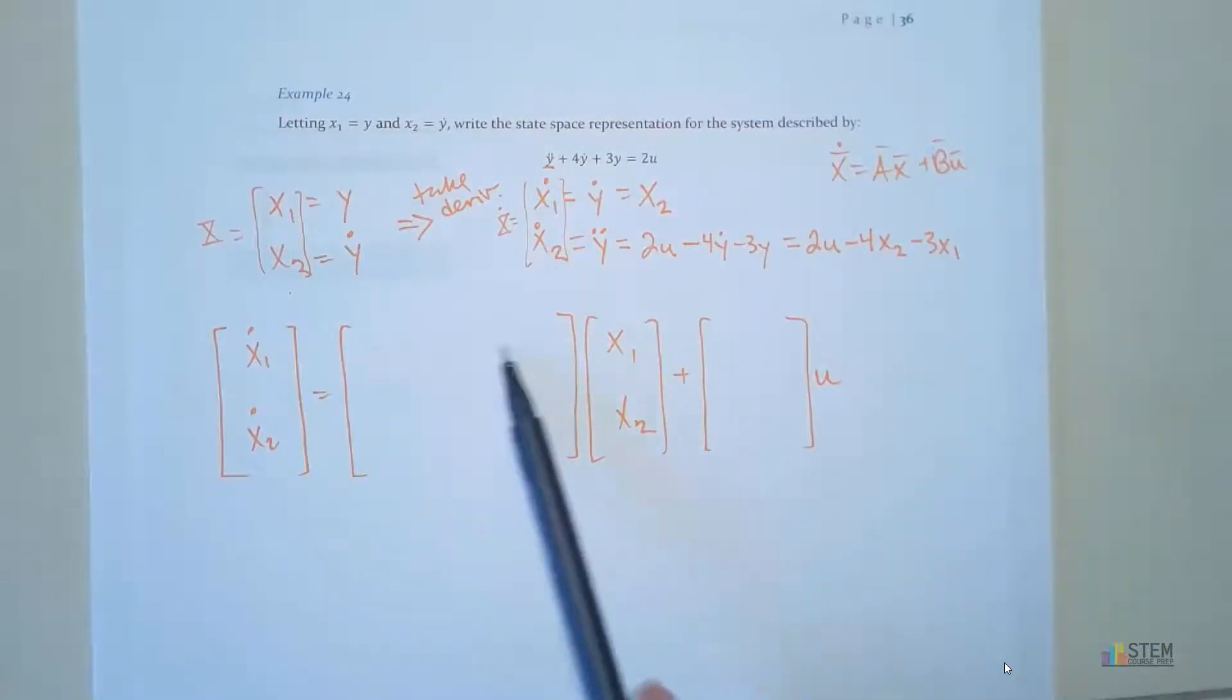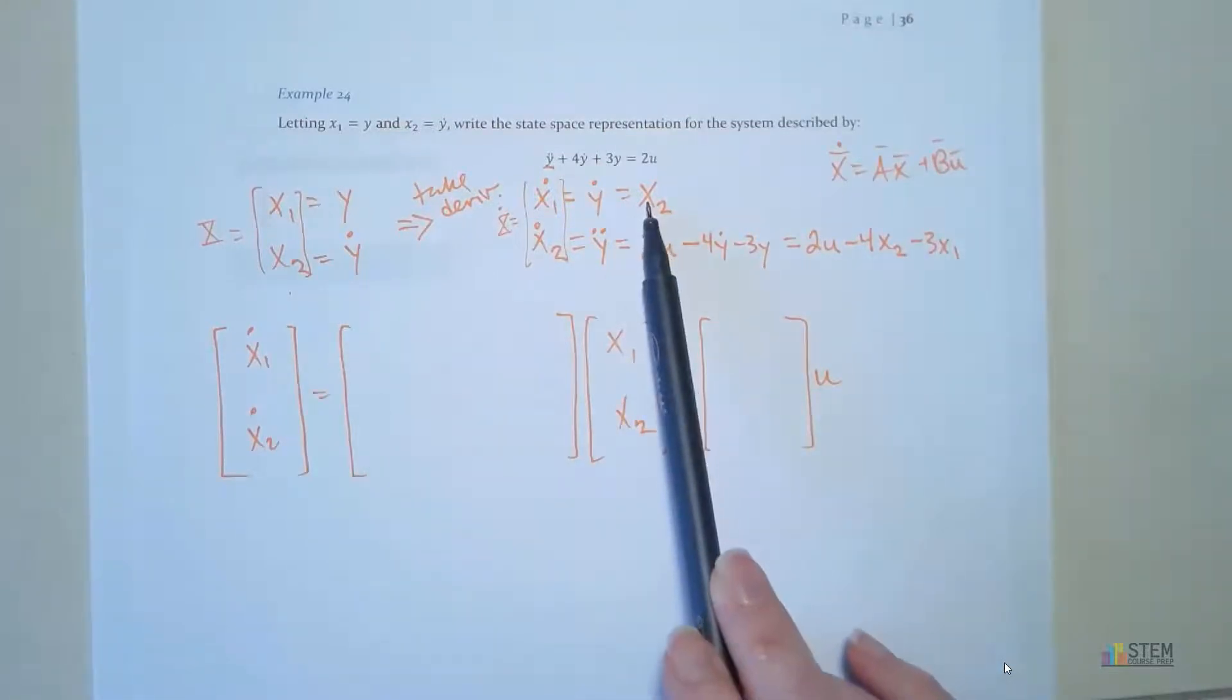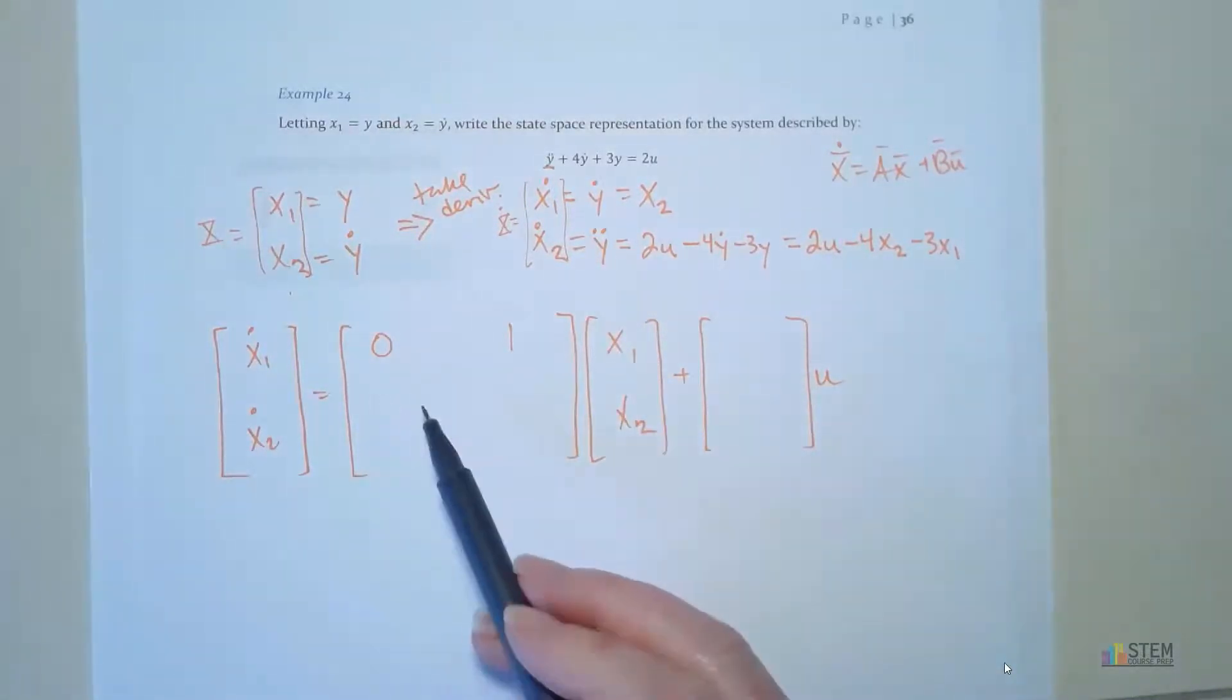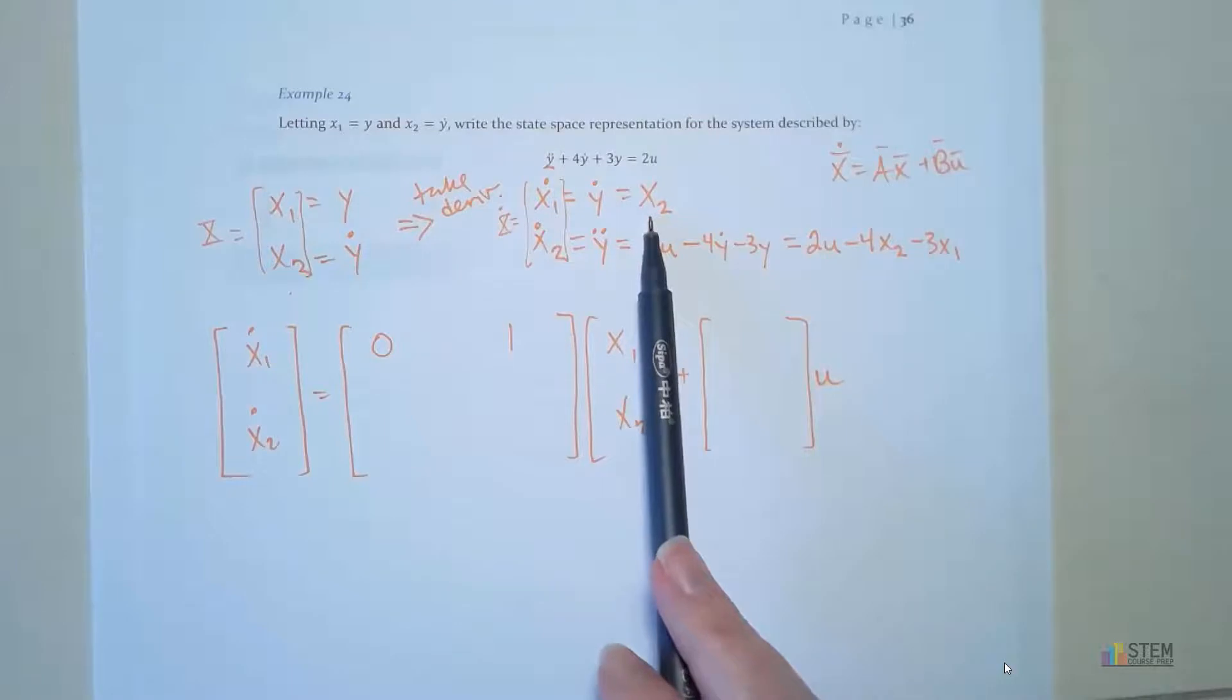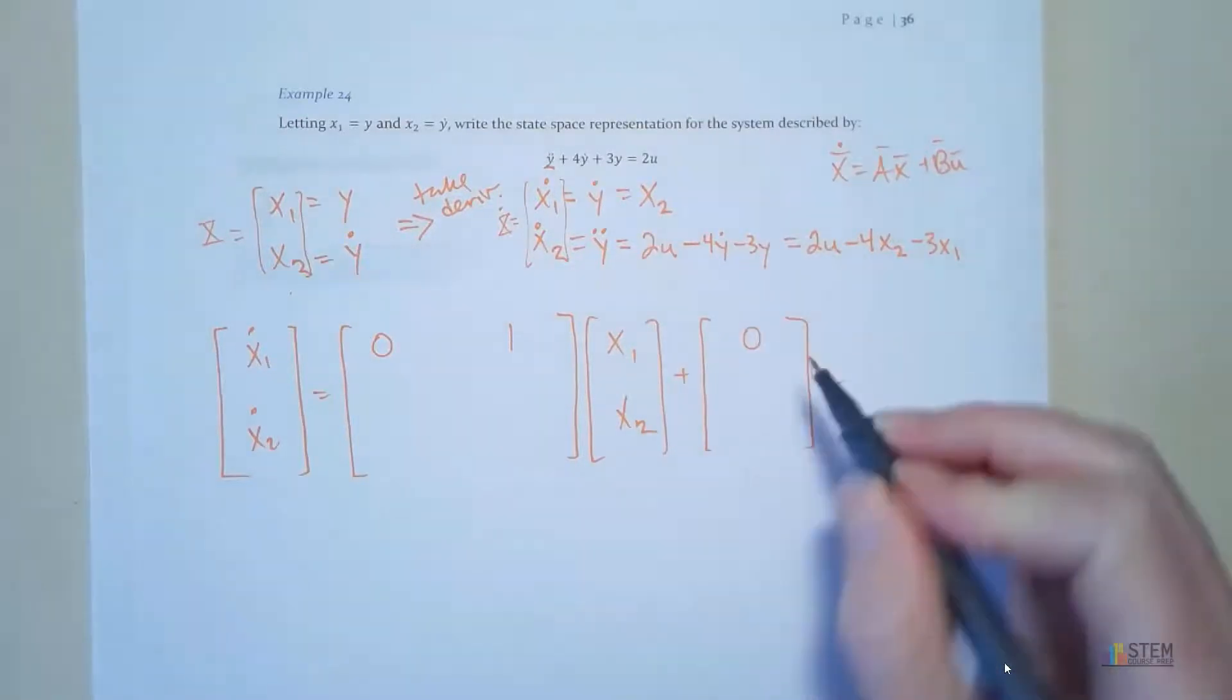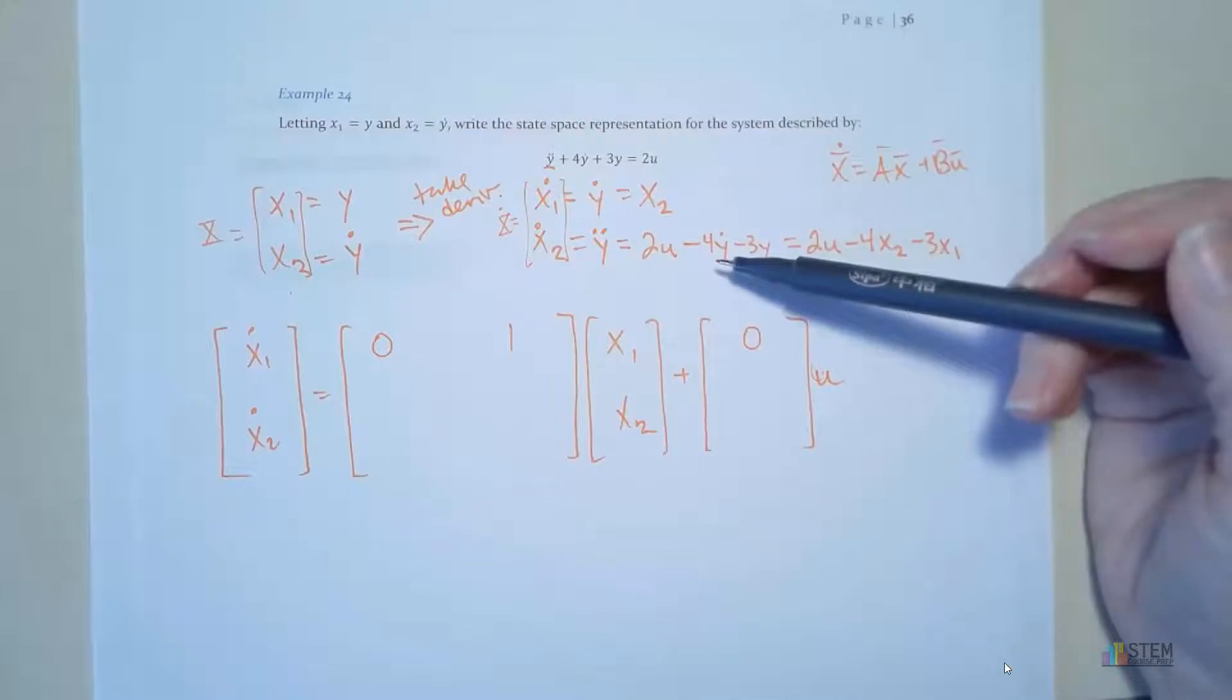So now if we have this, let's figure out what goes in this top row. We're trying to get x1 dot. x1 dot we know is x2. So I need to put values in here that will give me x2. Now this top row, I should have 0 and 1. And let's go over why that is. So 0 times x1 plus 1 times x2 gives me x2 right here. And there is nothing multiplied by u up here in this equation, so that goes to 0. So all we did was write this equation in matrix form. That's all we did.